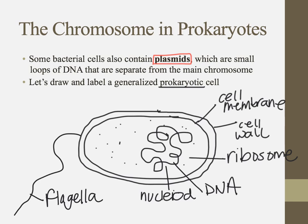And then some prokaryotes are going to have these smaller things sticking out from the outside, and these are called pili — pili is plural, pilus would be singular. Pili are these tubes that bacteria can kind of hook up to another bacterial cell. Through those pili — that bridge they form — they can exchange these things called plasmids, those small circular loops of accessory DNA. Bacterial cells can swap plasmids with other bacterial cells by forming a bridge with their pili.